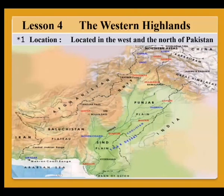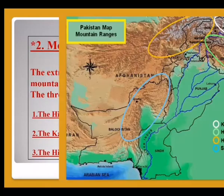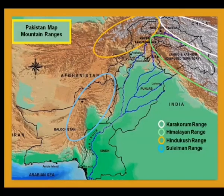The Western Highlands cover most of Balochistan, and they continue into Khyber Pakhtunkhwa and the northern part of Punjab. The extreme north of Pakistan is a mountainous region. The ranges here are the Himalayas, the Karakoram, and the Hindu Kush.